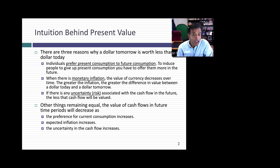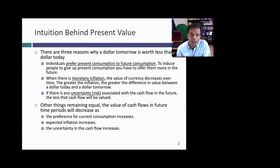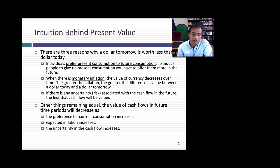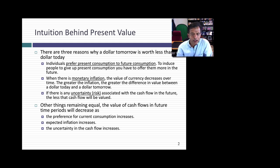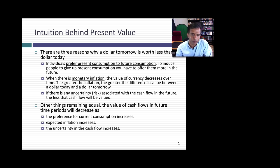The third reason is uncertainty. The dollar today I can collect from your hand, but a dollar a year from now I'm dependent on you showing up and giving me the dollar — and the more uncertain I feel about that, the less value I attach to it. So: preference for current consumption, inflation, and uncertainty. As each of these increases, the time value of money effect grows greater.